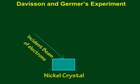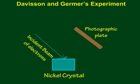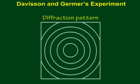The electrons are scattered from the crystal in different directions. The diffraction pattern obtained is similar to the diffraction pattern obtained by Bragg's experiment on diffraction of X-rays from a target in the same way.